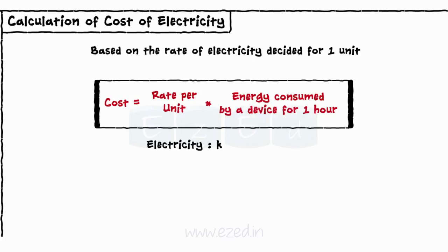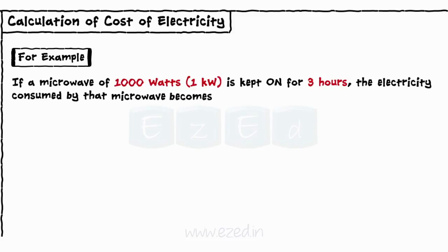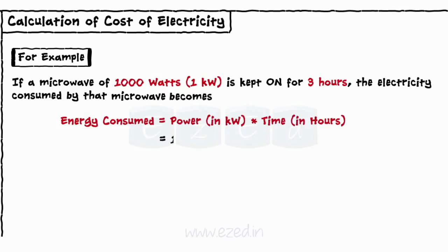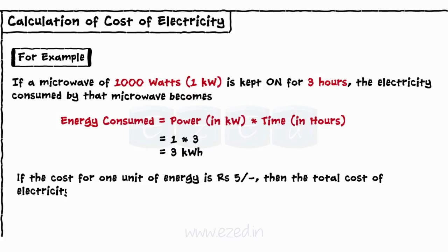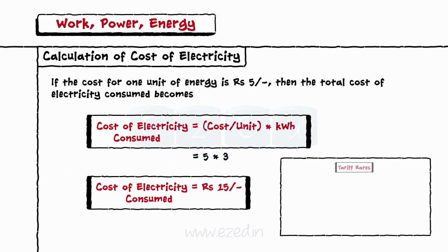The electricity consumed by each device is calculated in kilowatts. For example, if a microwave of 1000 watts or 1 kilowatt is kept on for 3 hours, the electricity consumed becomes: energy consumed equals power in kilowatts into time in hours equals 1 into 3 equals 3 kilowatt hours. If the cost for one unit of energy is rupees 5, then the total cost of electricity consumed equals cost per unit into kWh equals 5 into 3 equals rupees 15. The tariff rates for industrial establishments are higher than for residential establishments.